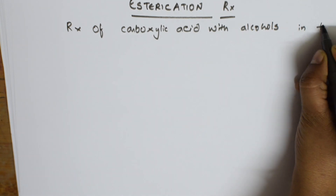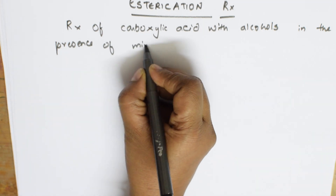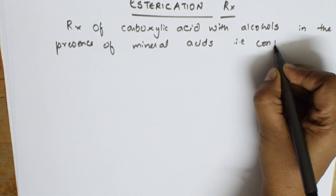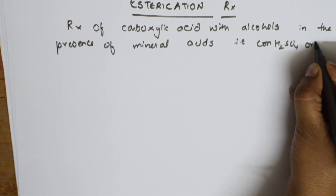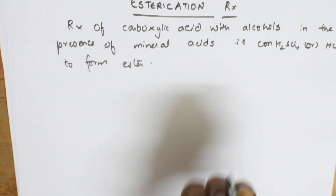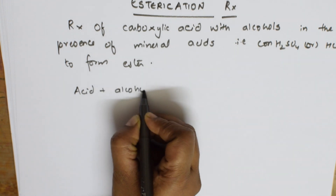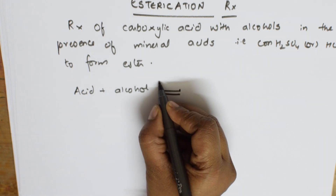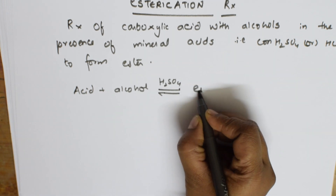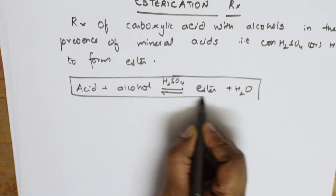The most important condition here is that the reaction is carried out in the presence of mineral acids — like concentrated sulfuric acid (H₂SO₄) or HCl. Acid combines with alcohol in the presence of H₂SO₄ to form an ester, and water is eliminated. This is a reversible reaction. This is your esterification reaction — if it is asked for one mark, you can write this reaction.